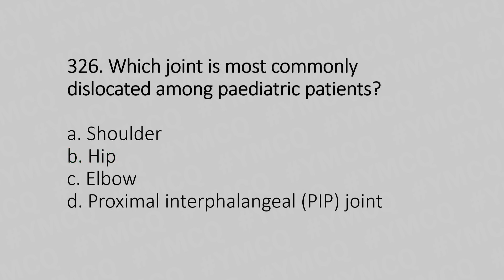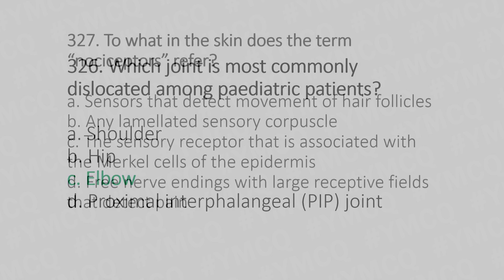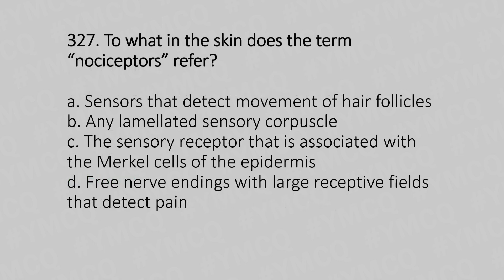Question number 326: Which joint is most commonly dislocated among pediatric patients? Option A: shoulder. Option B: hip. Option C: elbow. Option D: proximal interphalangeal joint. The answer is option C, elbow.